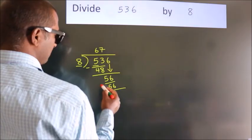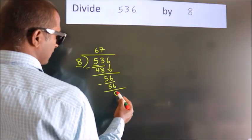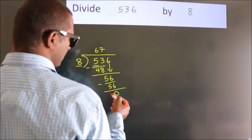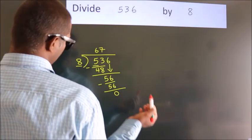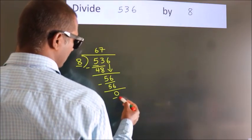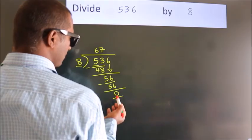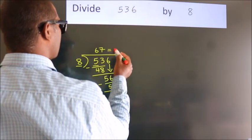Now we subtract and get 0. After this, no more numbers to bring down, and we got remainder 0. So this is our quotient.